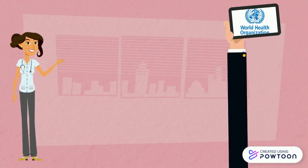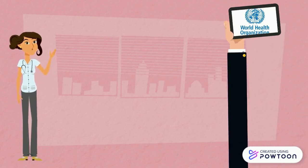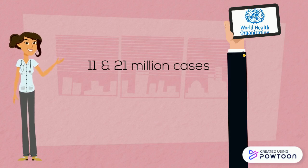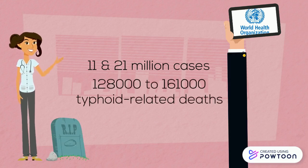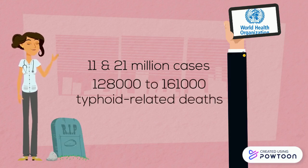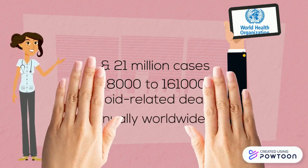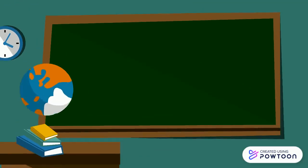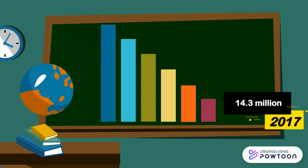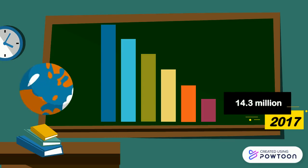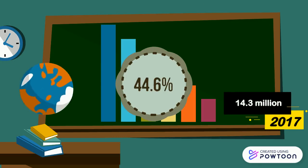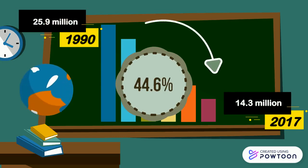WHO stated that according to the most recent estimates, between 11 and 21 million cases and 128,000 to 161,000 typhoid-related deaths occur annually worldwide. Globally, 14.3 million cases of typhoid fever occurred in 2017, a 44.6% decline from 25.9 million in 1990.